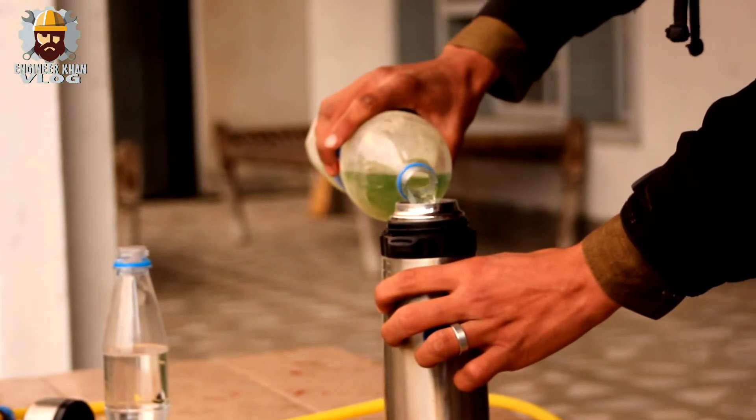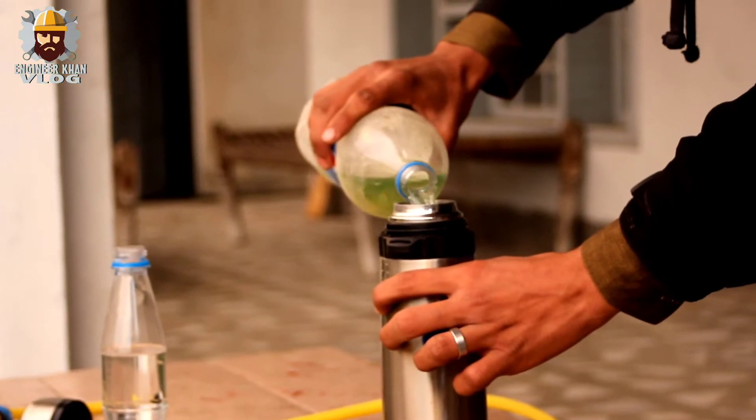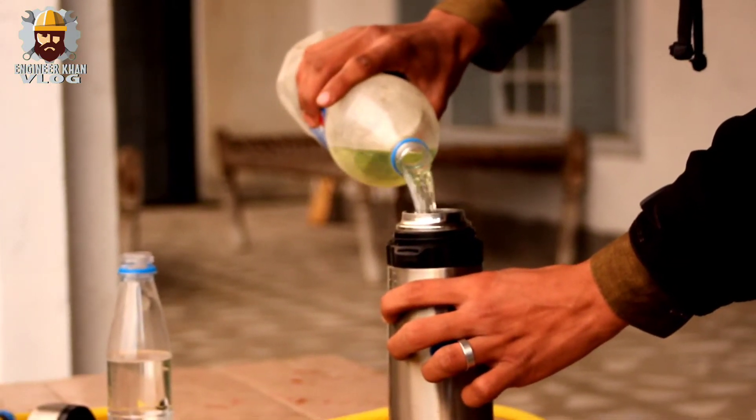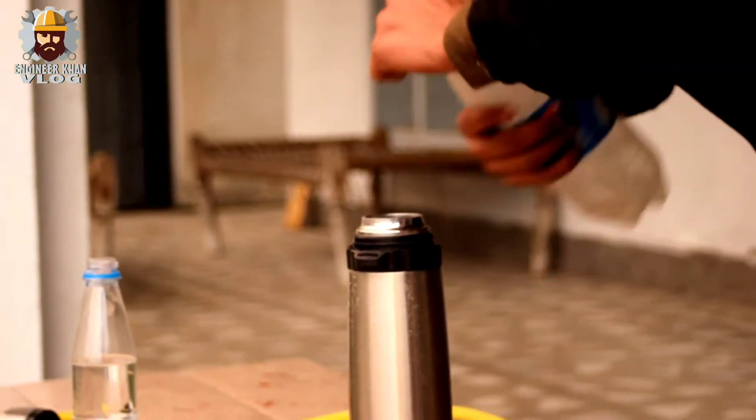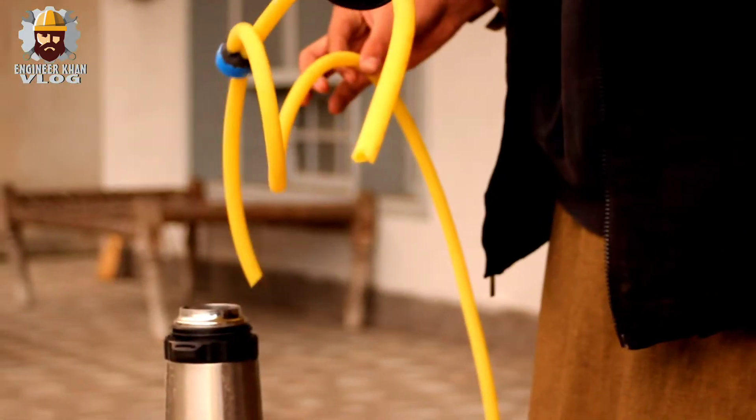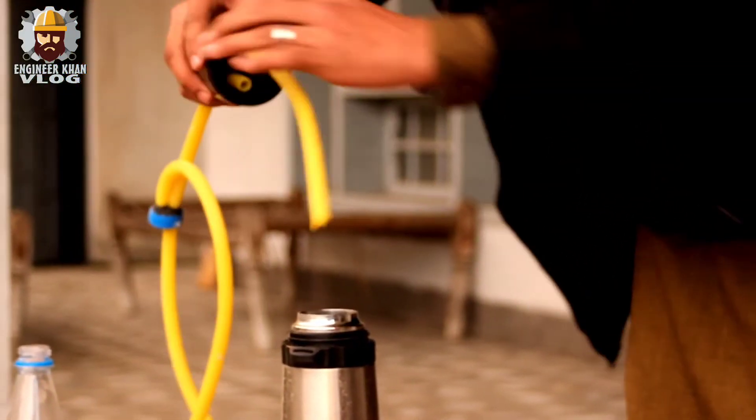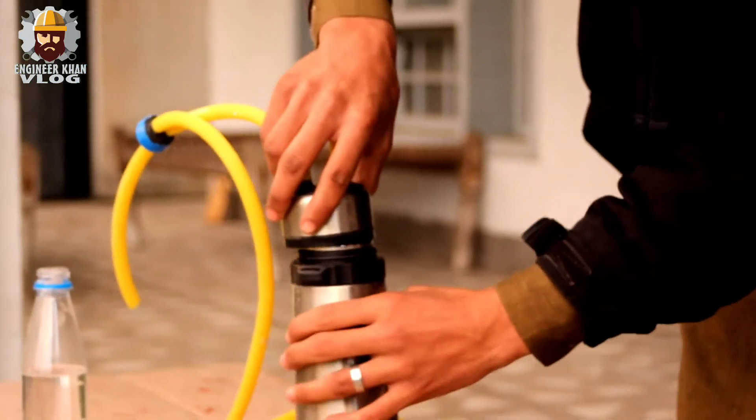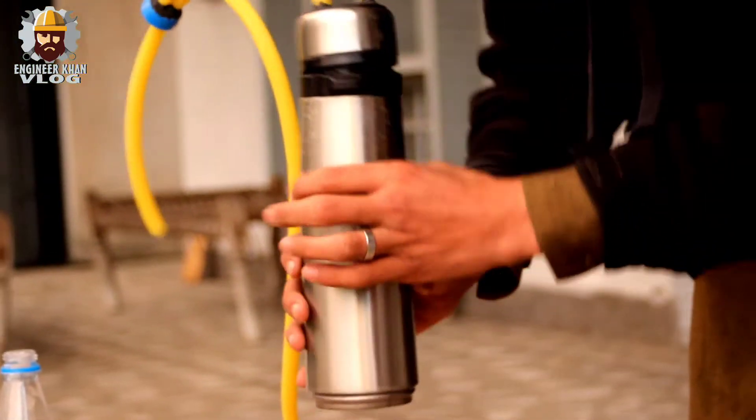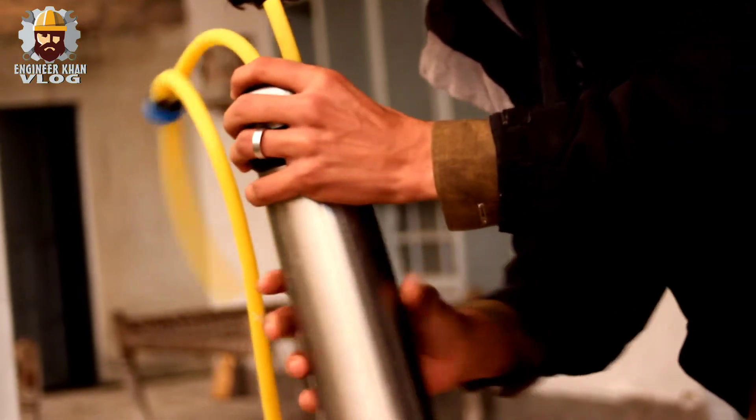First, we will pour the petrol in the first container very carefully, not spilling it and not filling the container up to the top, as we need to leave some space for air. Put on the lid with the pipes and close it firmly so that no gas escapes.